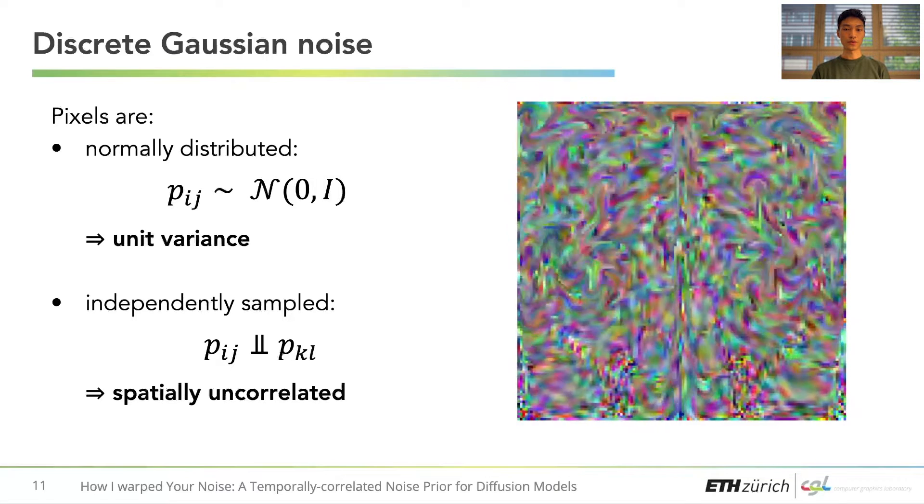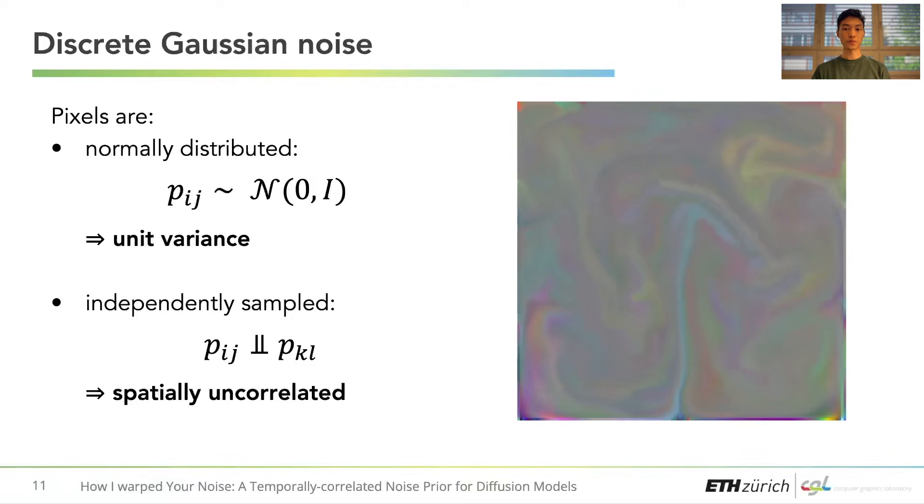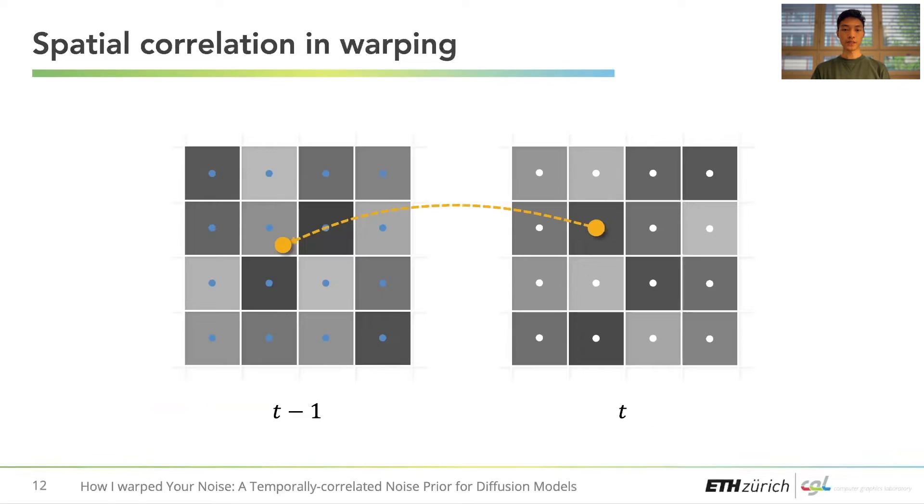Naively warping the noise using standard approaches destroys both of these properties. This is because in traditional warping, pixels are considered as points, and warping is implemented by interpolating neighboring pixels in a corresponding location of the previous frame. When the pixel in the previous frame contributes simultaneously to multiple pixels in the current frame, as highlighted in red, spatial correlation arises.